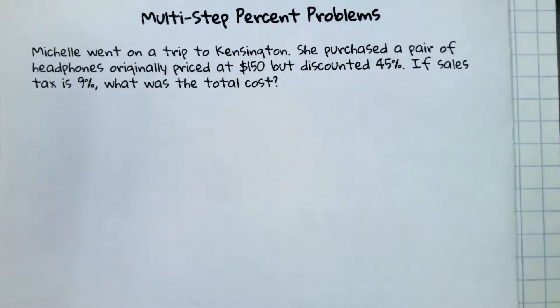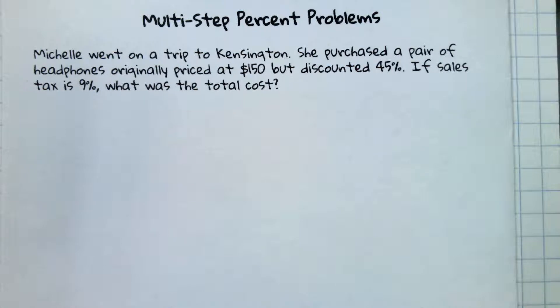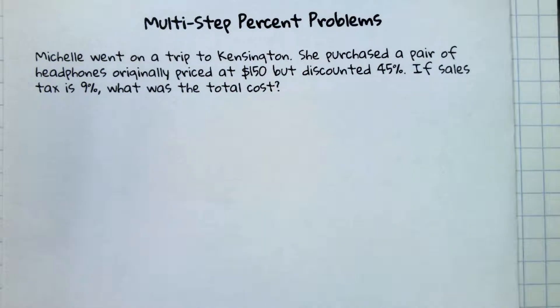Ezra, would you mind reading the first one for us? Michelle went on a trip to Kensington. She purchased a pair of headphones originally priced at $150 but discounted 45%. If sales tax is 9%, what was the total cost? So let's think this through. We need to discount something. When do we apply the tax, before or after the discount?